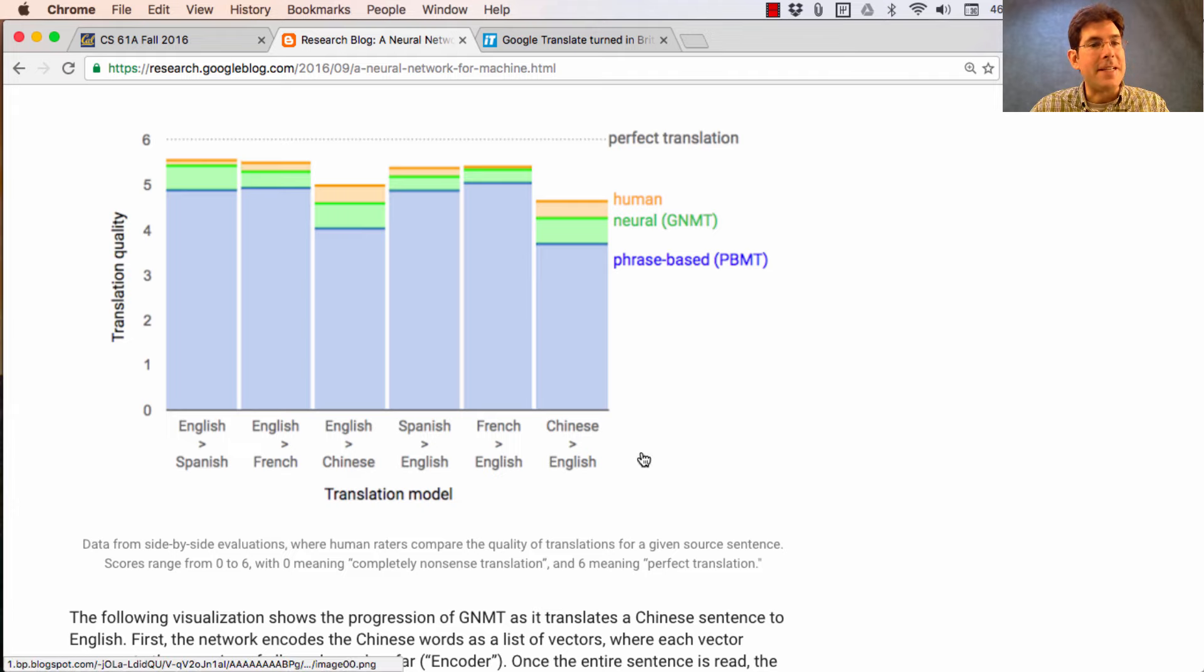And what you see in this chart is for several language pairs where there's lots of data available, lots of human translations to learn from. They measured the translation quality of three different ways of translating. The old system that they had in production for a long time, which they've incrementally improved over the years, a little bit with my help.